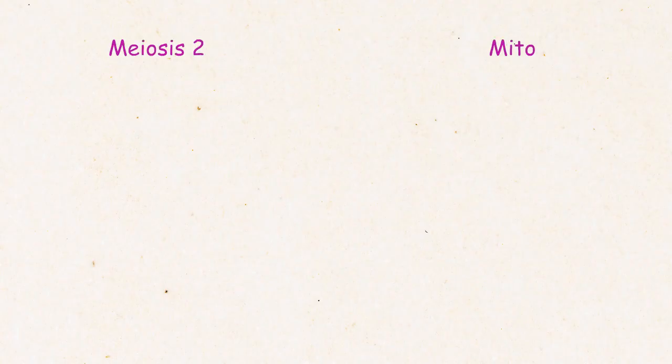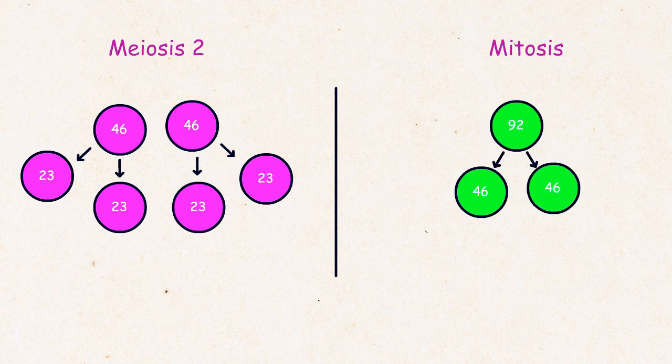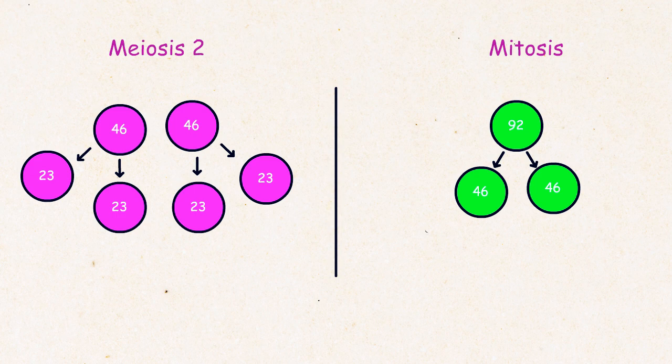Meiosis 2 is exactly similar to mitosis but there is a very important difference. In mitosis, a parent cell starts with 92 chromatids. And in meiosis 2, a parent cell starts with only 46 chromatids.